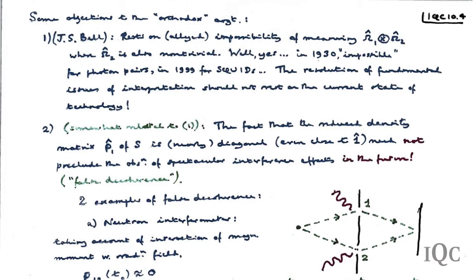Whether that assumption is reasonable depends on where you are and what you are talking about. In 1930 it would have been impossible to make correlated measurements on pairs of photons emitted in a cascade process; nowadays it is totally routine. In 1999 many people still claimed experiments to see macroscopic quantum superpositions in SQUIDs were totally ridiculous because SQUIDs are many-particle systems. Now there are dozens of such experiments in the literature. As John Bell pointed out: you should not let your interpretation of the quantum formalism depend on the current state of your technology.